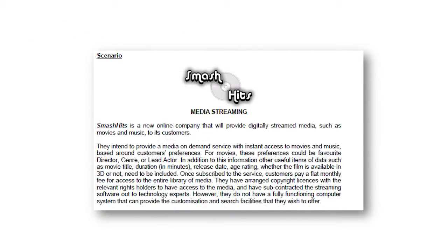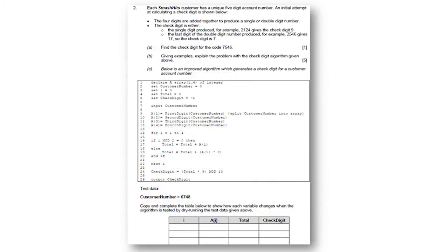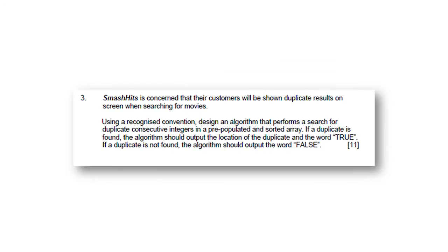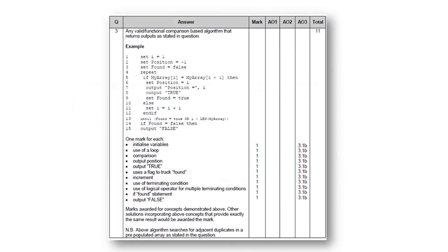Component 2 comprises an overarching scenario to put the tasks in this component into context in a real-world setting. Question 2 is an example of a question that assesses two assessment objectives when dry-running and interpreting an algorithm. As with the other components, the mark scheme is clearly structured and displays the answers assigned to the marks unambiguously, and is again linked to the assessment objectives. Here is an example of a question requiring learners to write an algorithm. This question targets one assessment objective and assesses computational thinking. The mark scheme provides an example of a completed algorithm, and the marking criteria clearly show the marks for each key area of the algorithm. This approach accommodates different approaches to writing algorithms that reach a correct solution.